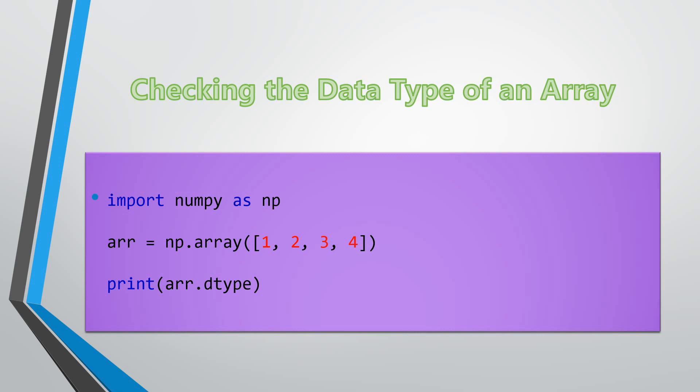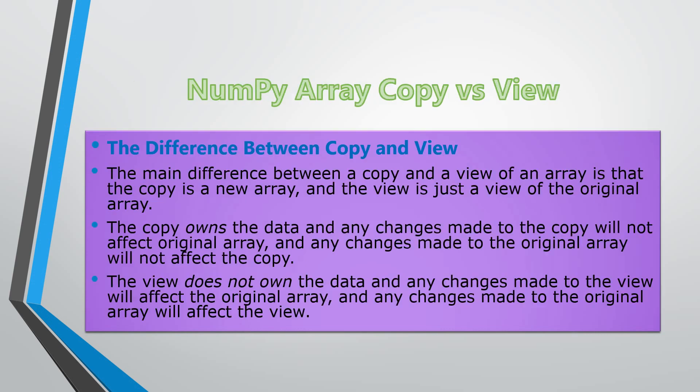Now checking the data types of an array, how can I check that? You can use array.dtype and this is what we want to find out. What is the data types of an array? I will show you this working.